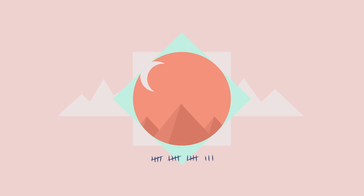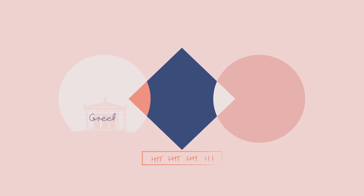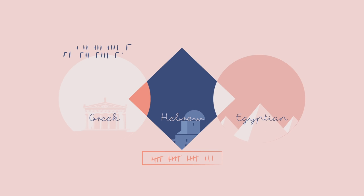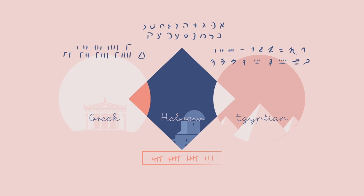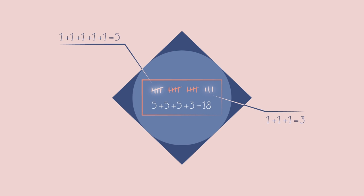So as they developed, different civilizations came up with ways of recording higher numbers. Many of these systems, like Greek, Hebrew, and Egyptian numerals, were just extensions of tally marks, with new symbols added to represent larger magnitudes of value. Each symbol was repeated as many times as necessary, and all were added together.